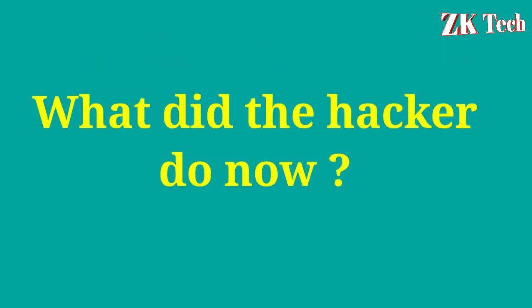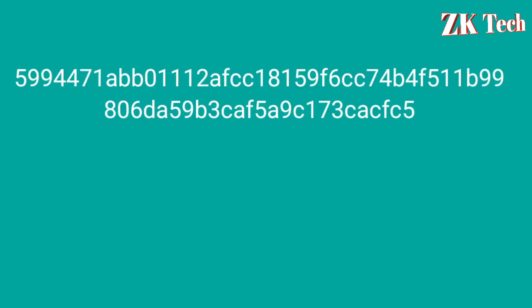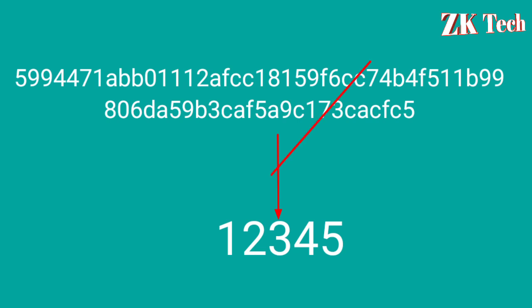So what does the hacker do now? The only possible way is to reverse the hash into its plain text form, which is highly impossible. Because the hash is a one-way function, and the plain text form of a hash cannot be obtained from the hash itself.